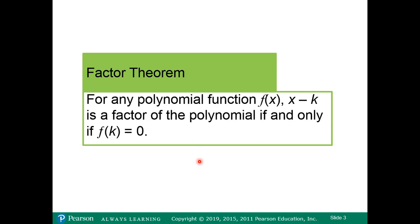So the Factor Theorem. Like we talked about before, we can use the fact that if the remainder is 0 — for example, f of k for some k value is equal to 0 — then we can use the Factor Theorem. We know from the Remainder Theorem that if x minus k, if k is a zero, then the remainder is going to be 0.